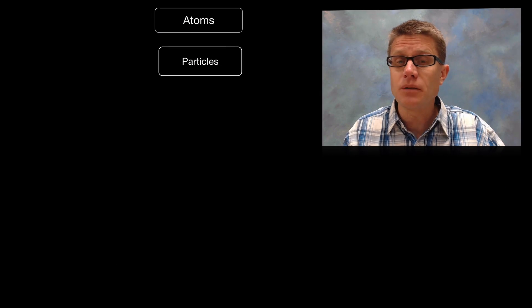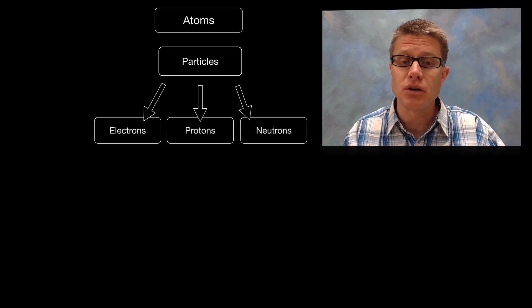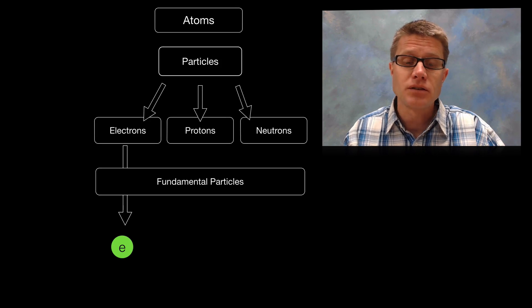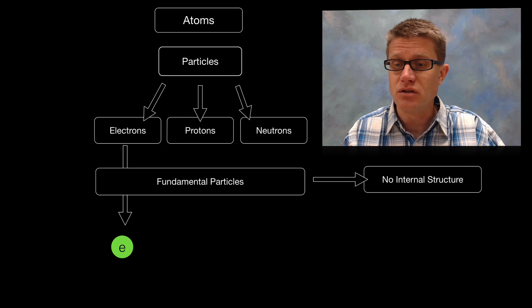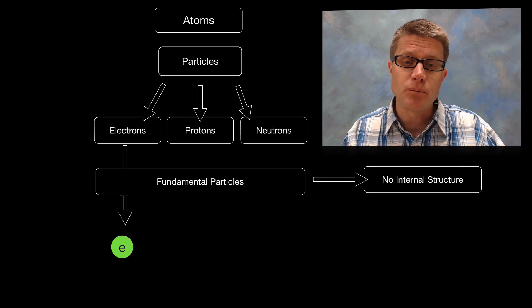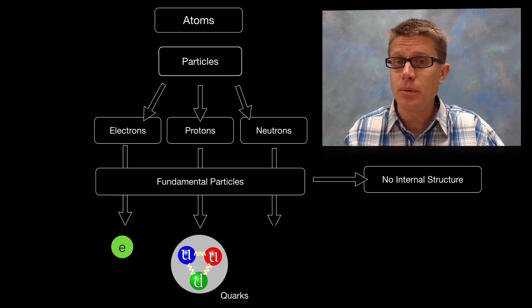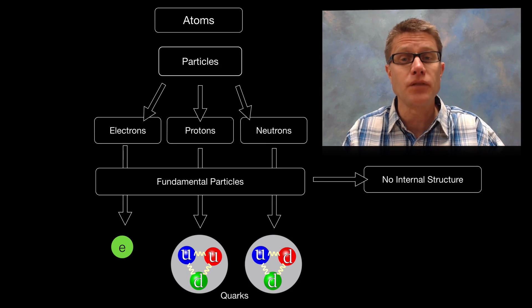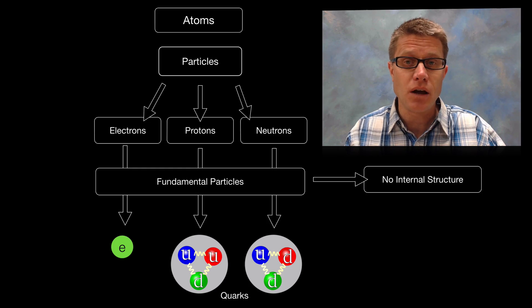And so atoms are made up of subatomic particles, electrons, protons and neutrons. And not all of these are fundamental particles. And so an electron is because it has no internal structure. But protons and neutrons are made up of quarks. And those quarks themselves have no internal structure and so they are fundamental but the protons and neutrons are not.